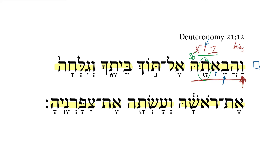Remember that if we have a schwa already in that first position and then we add another schwa to it, we have what I call a schwa fight. We end up losing the initial schwa, and it becomes the short vowel that is associated with the hatef patah. So that is indeed a veqatal form, even though you're not seeing the schwa under the vav.